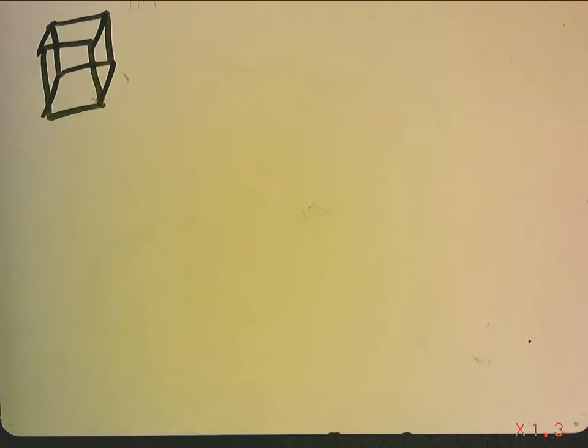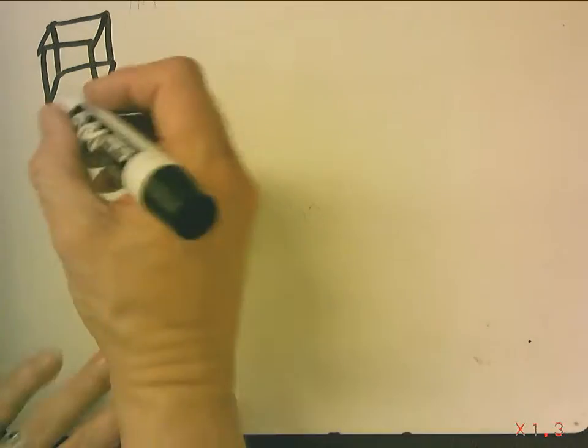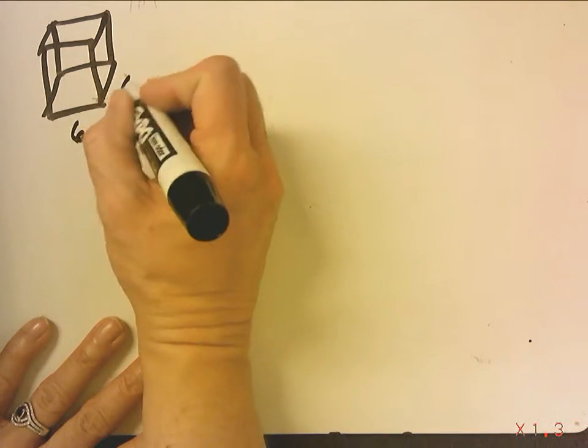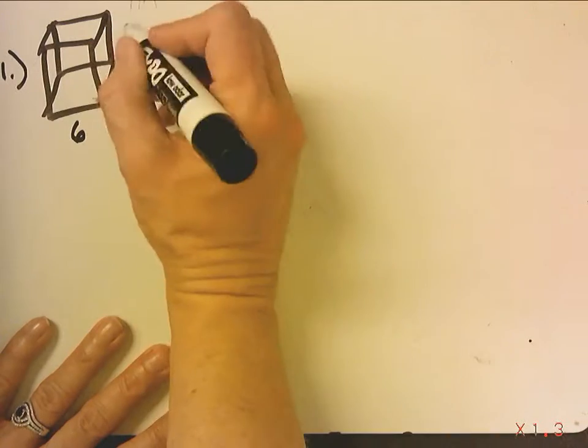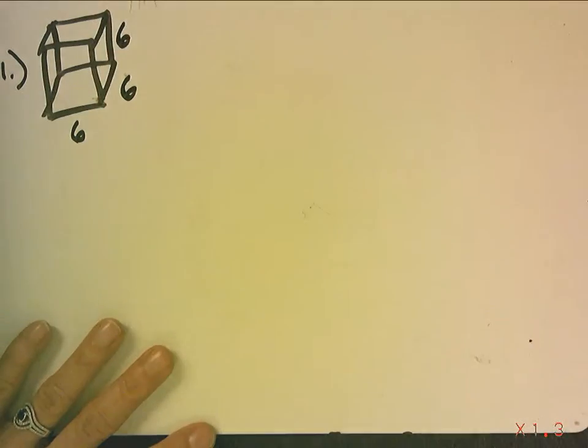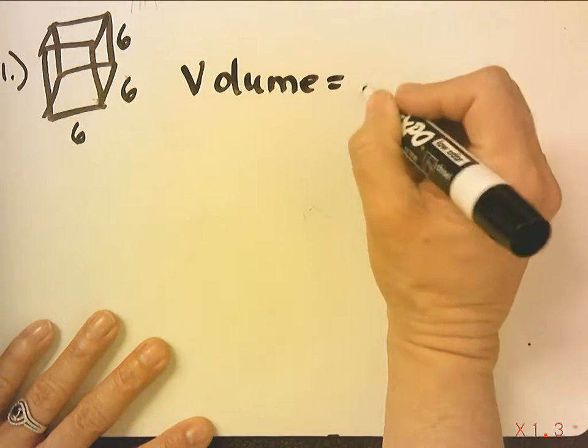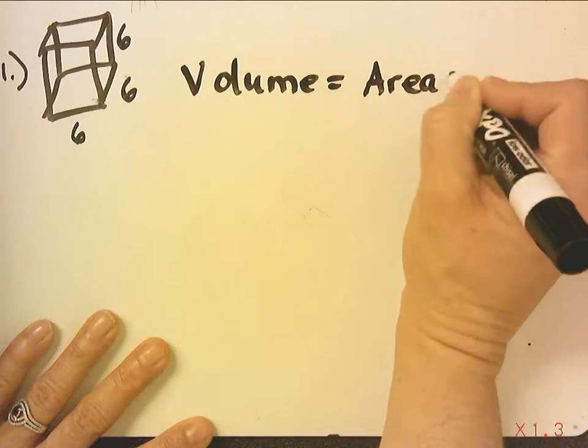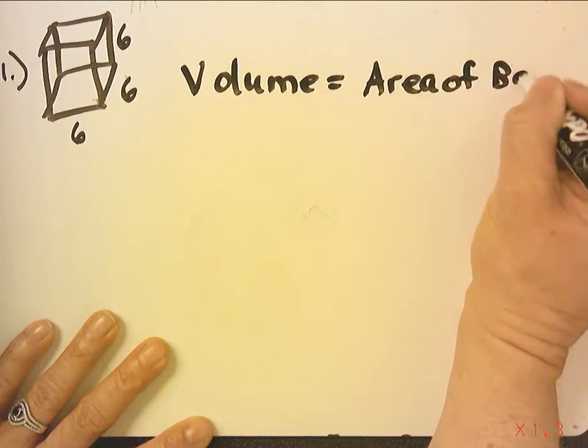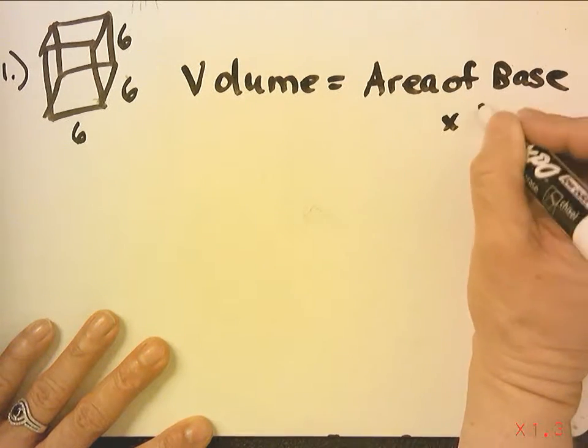Remember, a prism has parallel and congruent bases. So, this base is 6 by 6, and the height is 6. To find the volume, you always find the area of the base times the height.